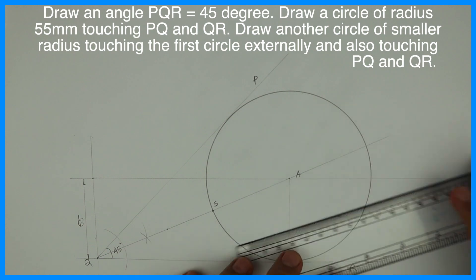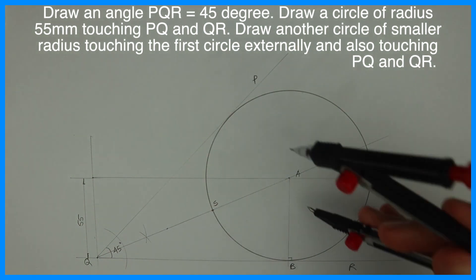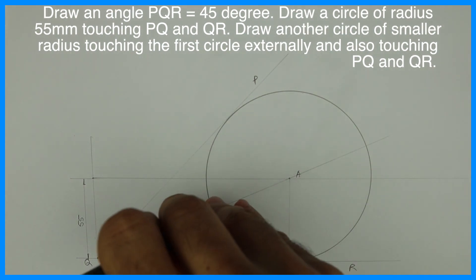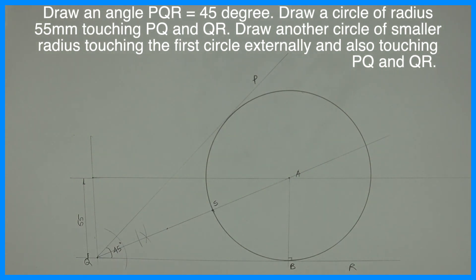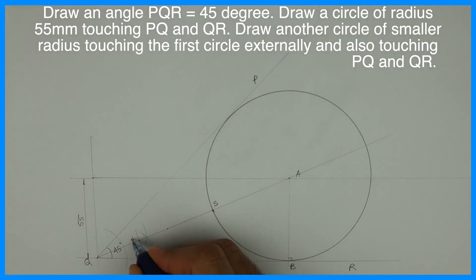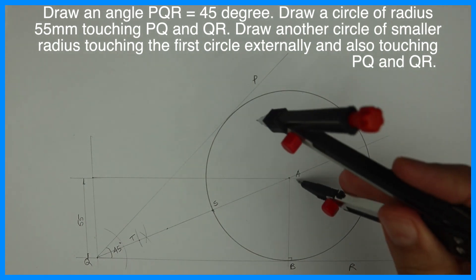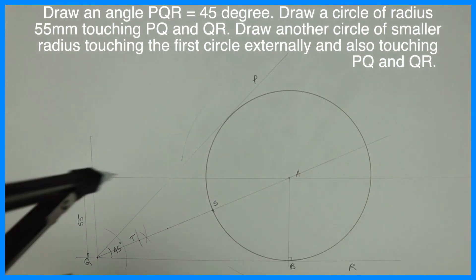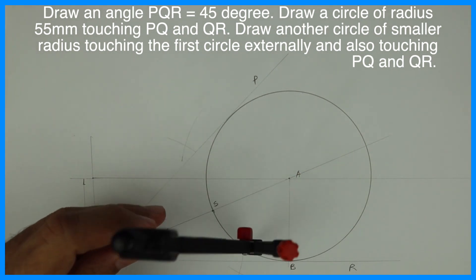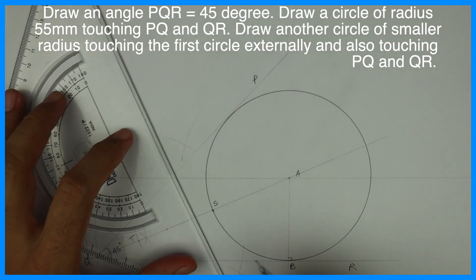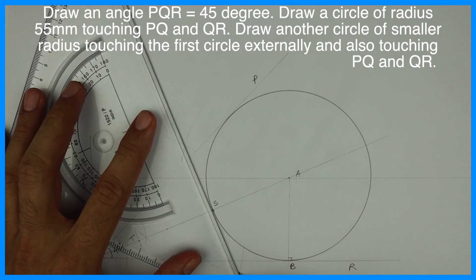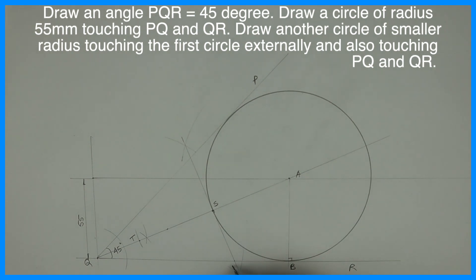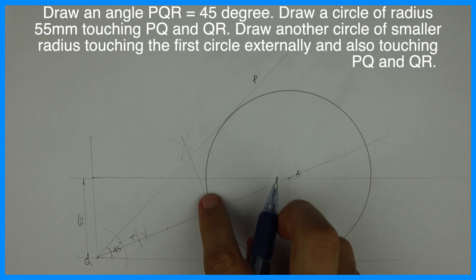See, this is 55, A to S. Right? So we will take A to S and we will cut it on this side. So this is point T. Then we will bisect AT. This is point C. So we got this tangent.